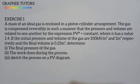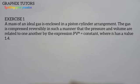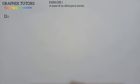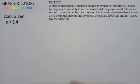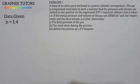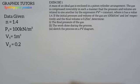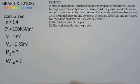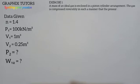When doing a question like this, the first thing you have to do is write out your givens, your data, your parameters. The data given here: n is 1.4, which is called the polytropic exponent or polytropic index. The initial pressure P1 is 100 kilonewton per meter square, the initial volume V1 is 1 meter cube, and the final volume V2 is 0.25 meter cube. The final pressure is not given, so we are told to calculate it. The work transfer during this process is also not given, so we are told to calculate it. Recall for a polytropic process,